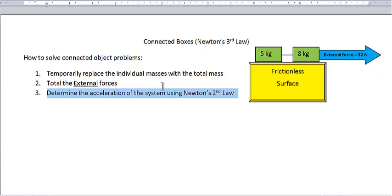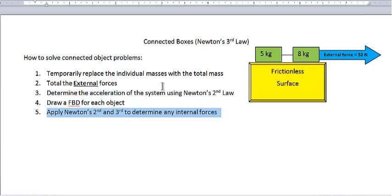Step 3 is determine the acceleration of the system using Newton's second law and then step 4 you go back to the original picture you had and you draw free body diagrams for each of the individual objects. Once you get the FBD drawn you apply Newton's second and third law to determine any internal forces and you're done.